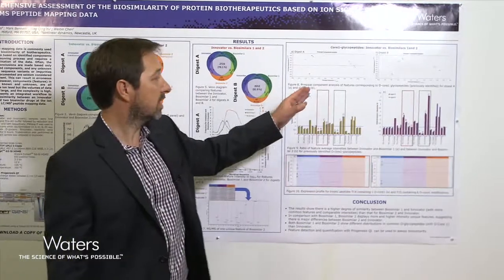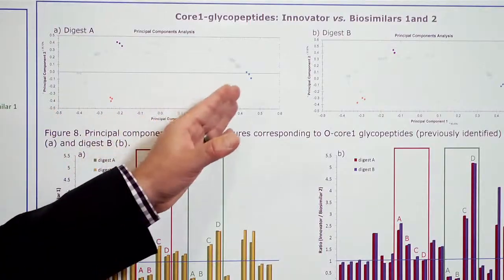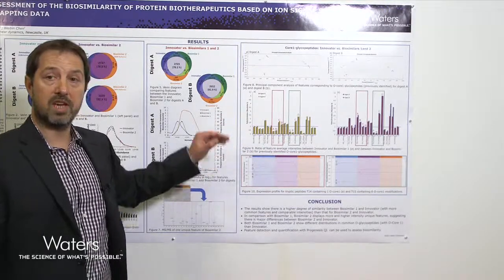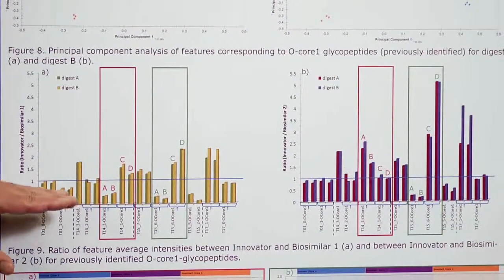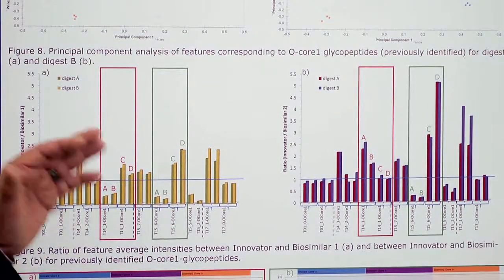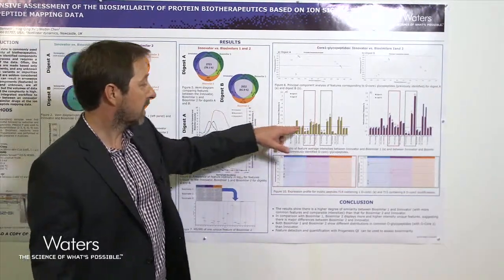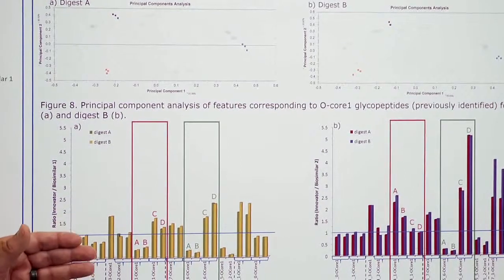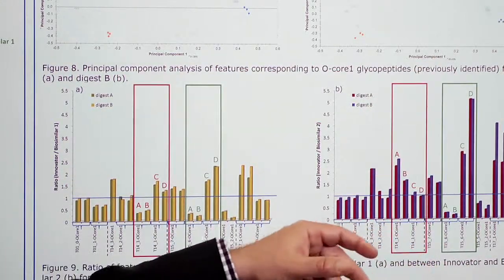This is slightly different from before: earlier I said innovator and biosimilar one look very similar, but in this case we start to see differences between the innovator, biosimilar one, and biosimilar two. If we look at the ratio between the innovator and biosimilar one, and the innovator and biosimilar two — the blue line represents a ratio of one, meaning no difference — you can start to see right away that some features have a very different ratio, meaning the intensity between the innovator and the biosimilar are very different.